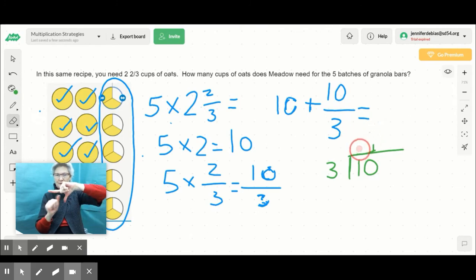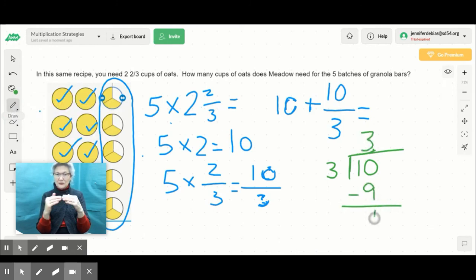So I know that 3 times 3 is 9, which means I have one left, one remaining. Well, that one isn't one whole. It's really one-third piece, so I can write it like this. So now what? Now I know that I have 10 plus 3 and 1/3.